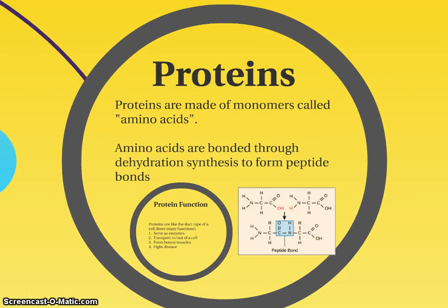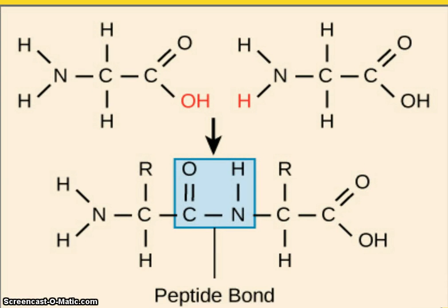Now we'll move on to proteins. Proteins are a polymer made of monomers called amino acids. Amino acids are bound together by the same reaction as carbs — dehydration synthesis. We still make a covalent bond, but this time it's called a peptide bond. Up top in this picture we have an amino acid on the left and an amino acid on the right; in the middle, highlighted in red, are the OH and H that are going to make the water as this bond is synthesized.